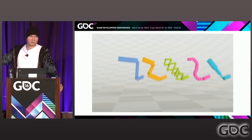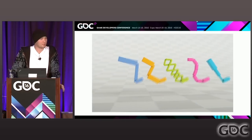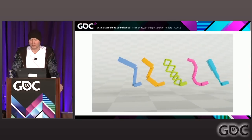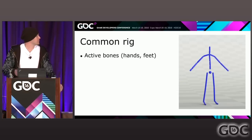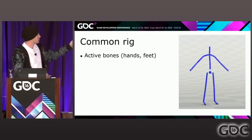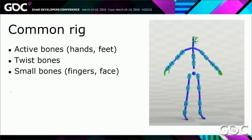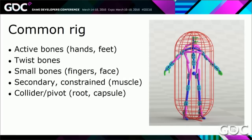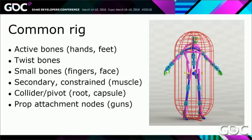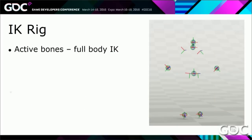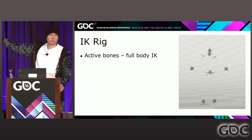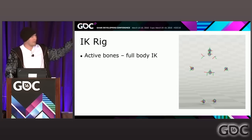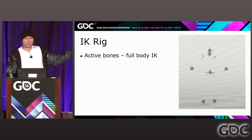In this example, the blue leg is the default config. Everything else is running exactly the same animation but on different rigs — this is possible because each of those rigs has been mapped. What constitutes a casual rig? We have active bones for body data, hands, feet, twist bones, small bones for fingers and face, secondary constraint muscle bones, different nodes, pivots for root, capsule, prop attachment, and so on. In the case of IKRig, bones can be the same, but we're not working with bones after mapping — we're working with IKRig nodes. So there are two IK chains for hands, two chains for legs, one for spine, one for head. That's it.